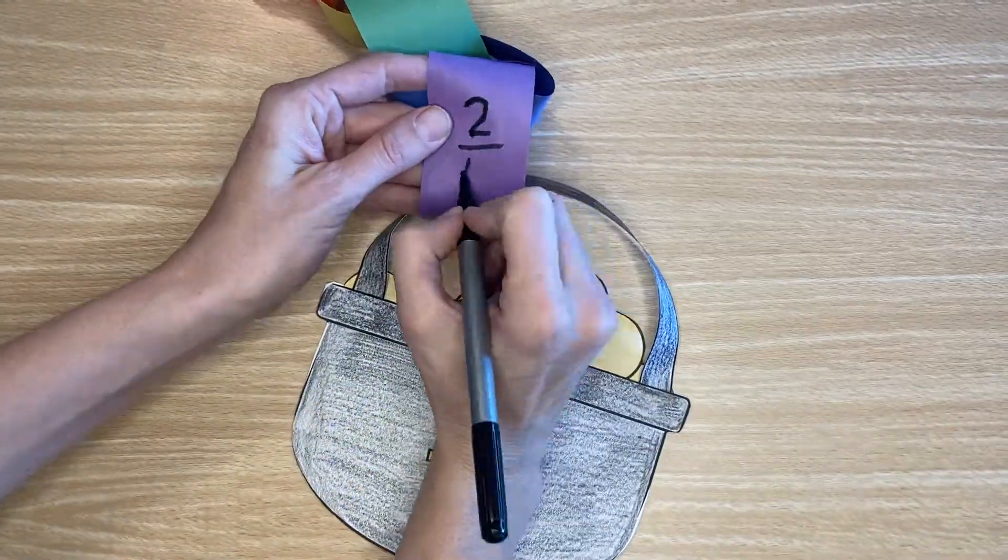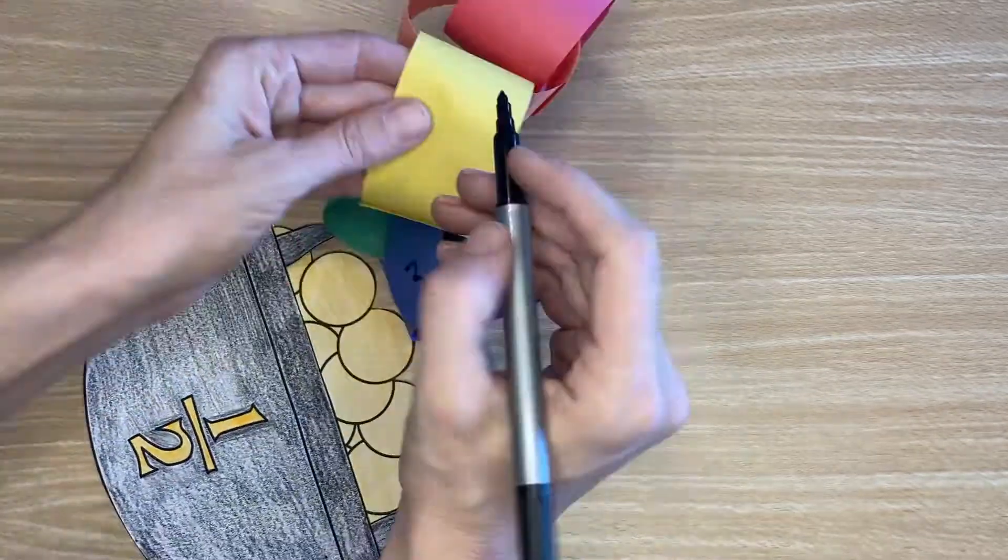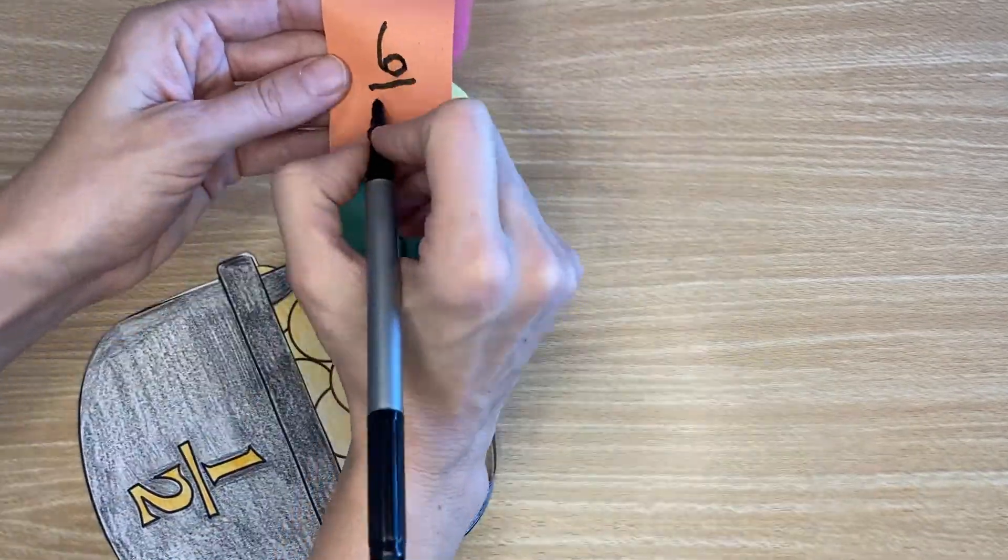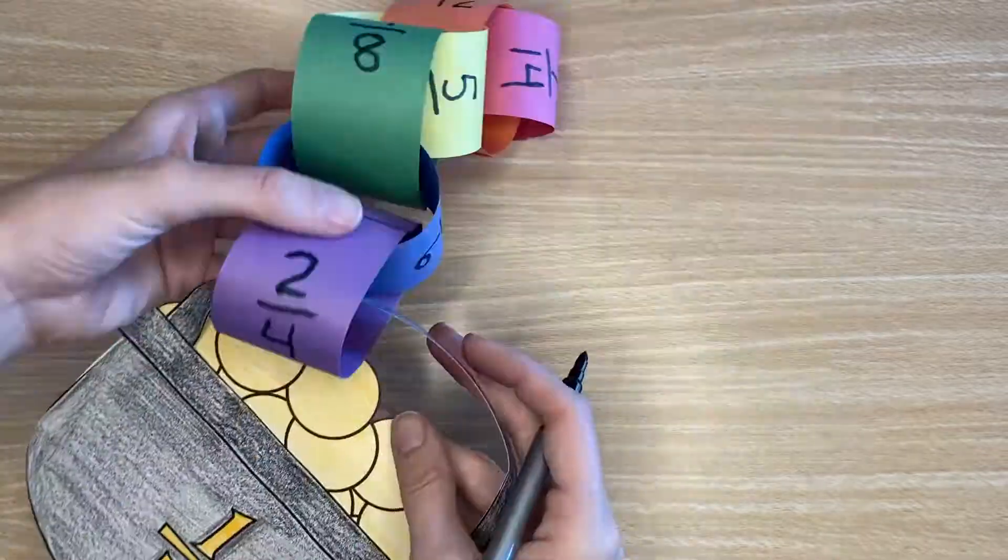Next students will write equivalent fractions, one on each chain link, fractions that are equivalent to the fraction shown on the front of their pot of gold.